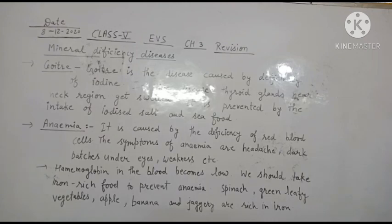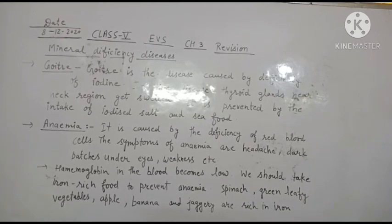Foods rich in iron include spinach, green leafy vegetables, apple, banana, jaggery, and gud. These foods are rich in iron and help prevent anemia.